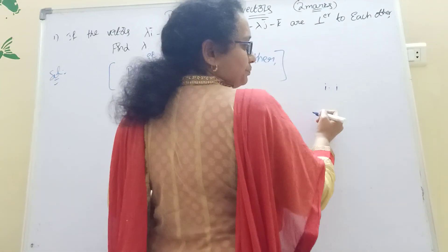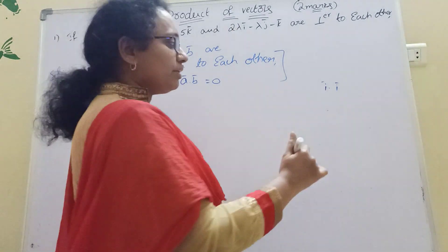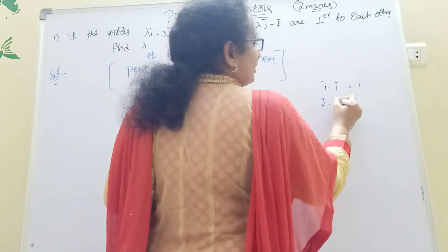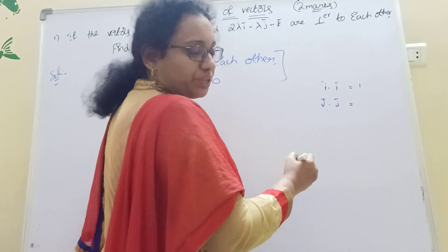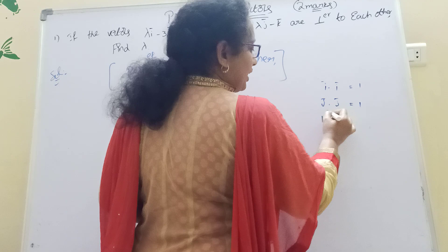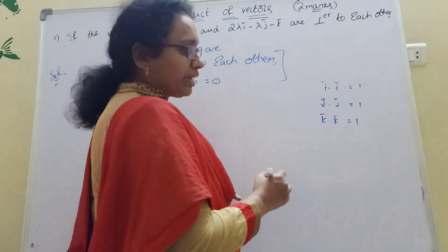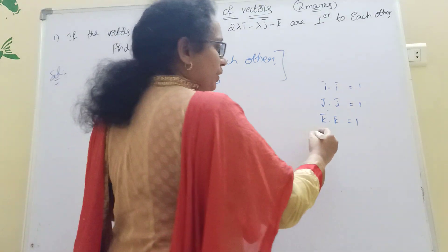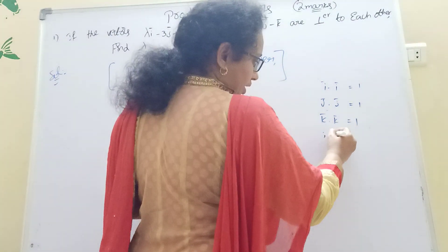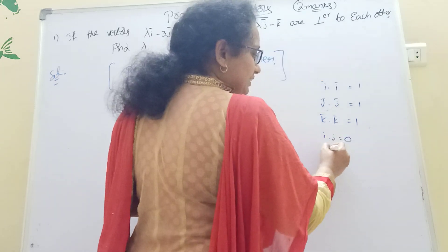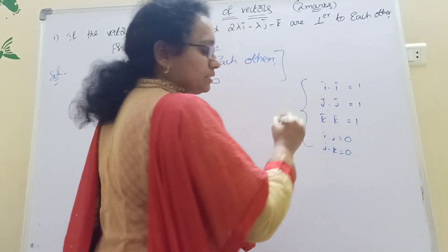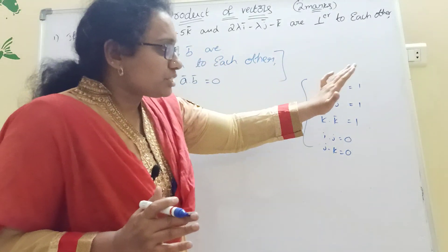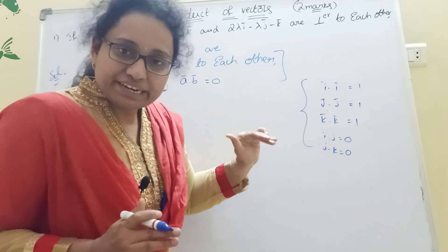For the dot product, the standard results are: i dot i is 1, j dot j is 1, k dot k is 1. When the same unit vectors are dotted, the result is 1. But i dot j is 0, j dot k is 0 — different unit vectors give 0. These are the general reference values.